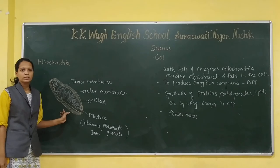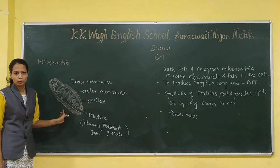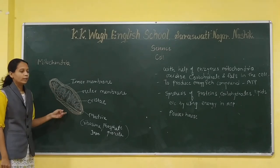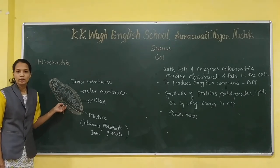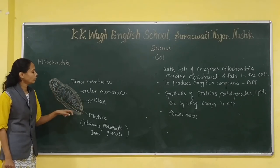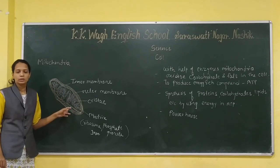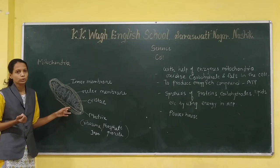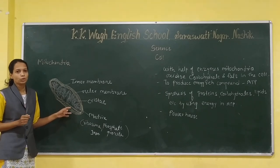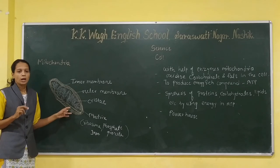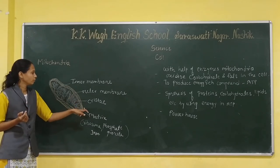Here you can see the structure of the mitochondria. Mitochondria has two layers, and the outer layer is porous — it has holes, so it allows the transmission of important materials from the outside to the inside of the mitochondria.